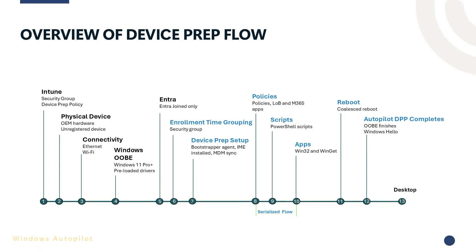This part is very important: we are serializing how policies, scripts, and apps are delivered. This is a key difference between Autopilot and Autopilot device prep. We wanted to ensure things are delivered in a more controlled way and users get a consistent experience with no conflicts between apps. Without this, you cannot reliably set line of business and Win32 apps at the same time as that's prone to errors. The delivery order is: first policies, line of business apps, and Microsoft 365 apps; next PowerShell scripts if configured; and finally Win32 and Winget or Microsoft Store apps. This ensures the process is more reliable and less prone to issues.